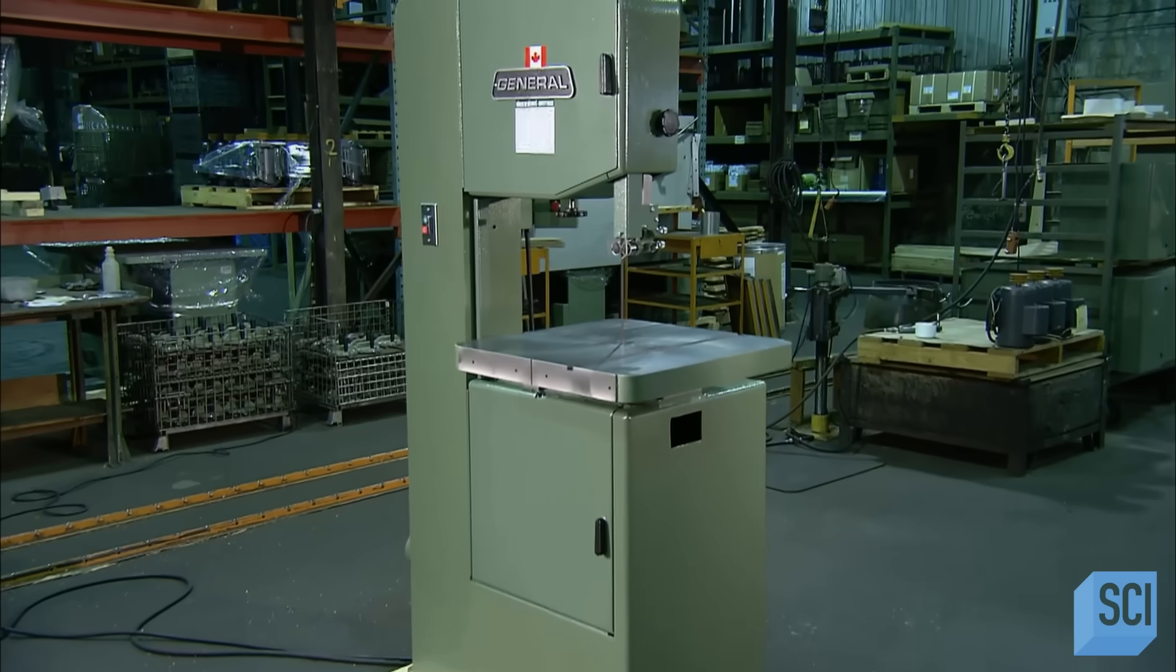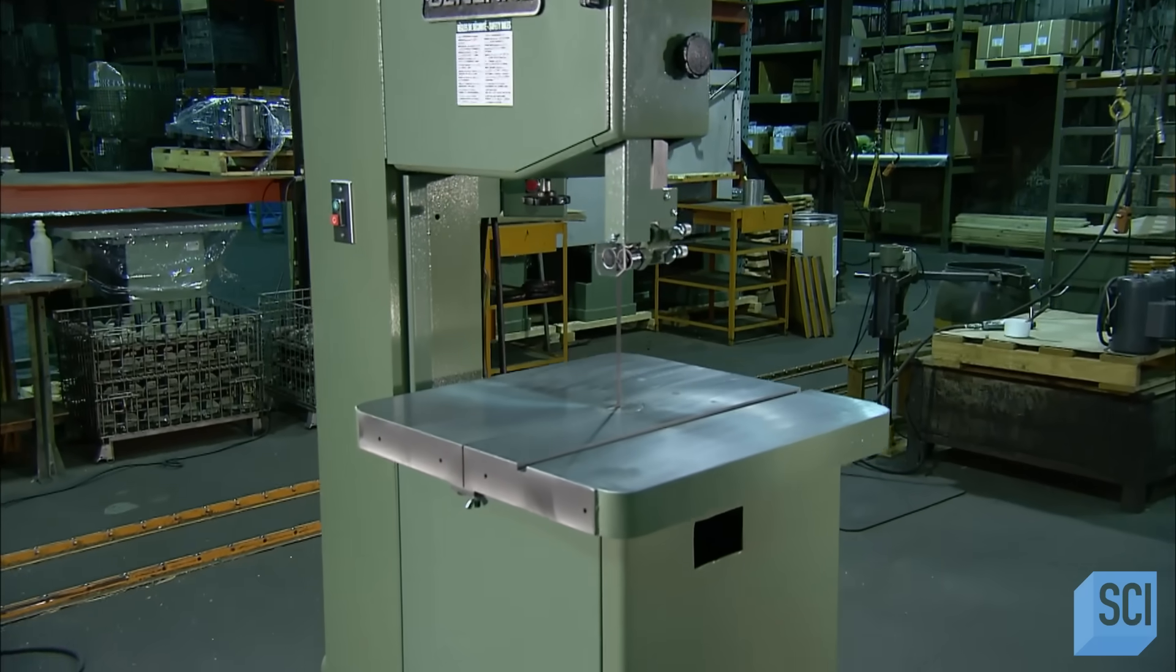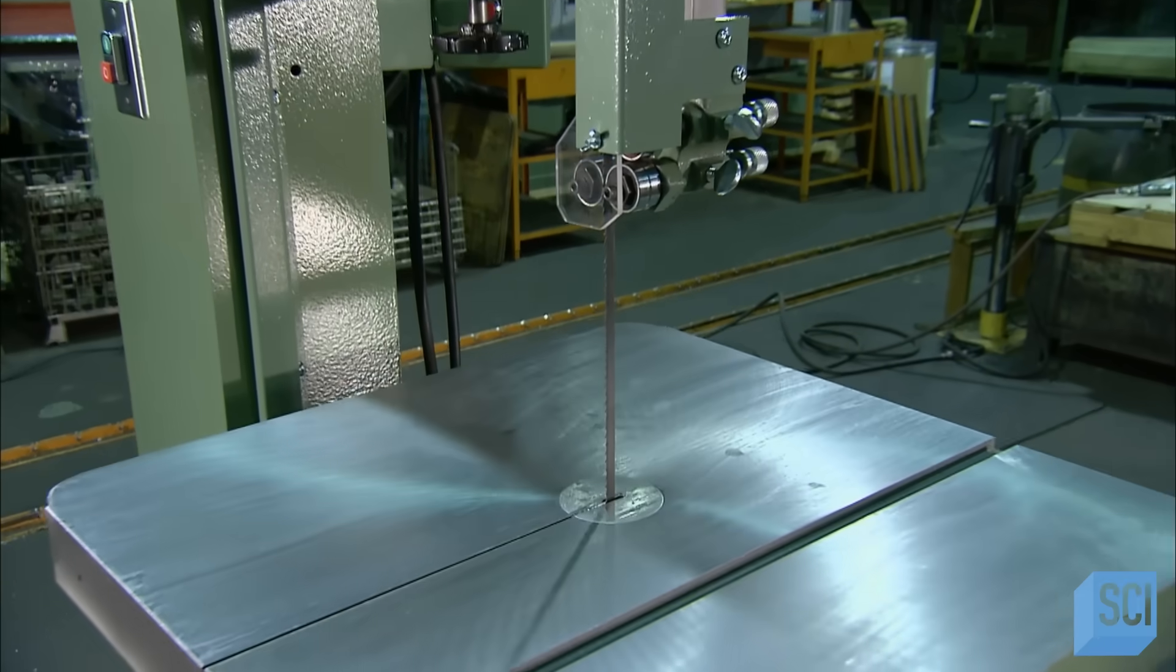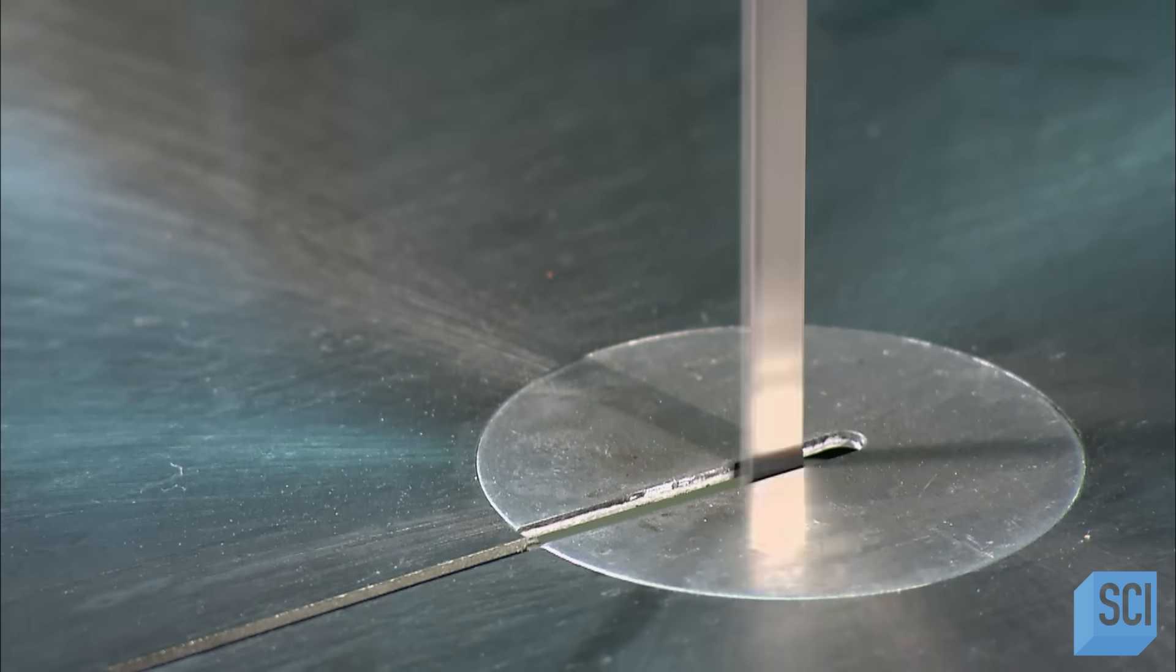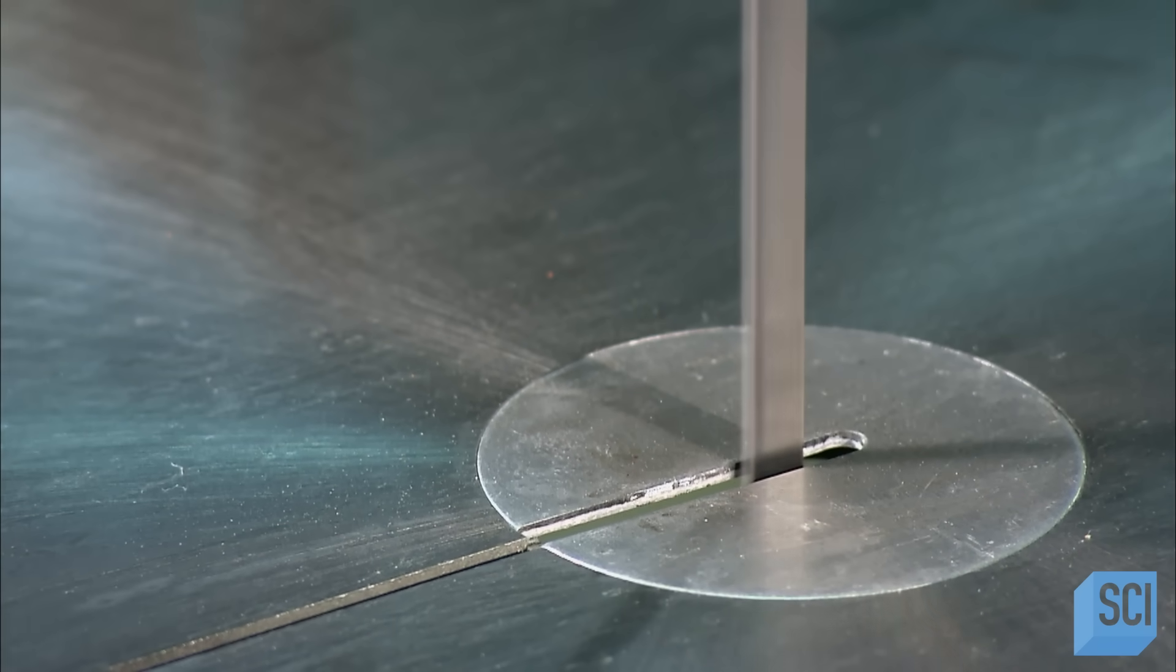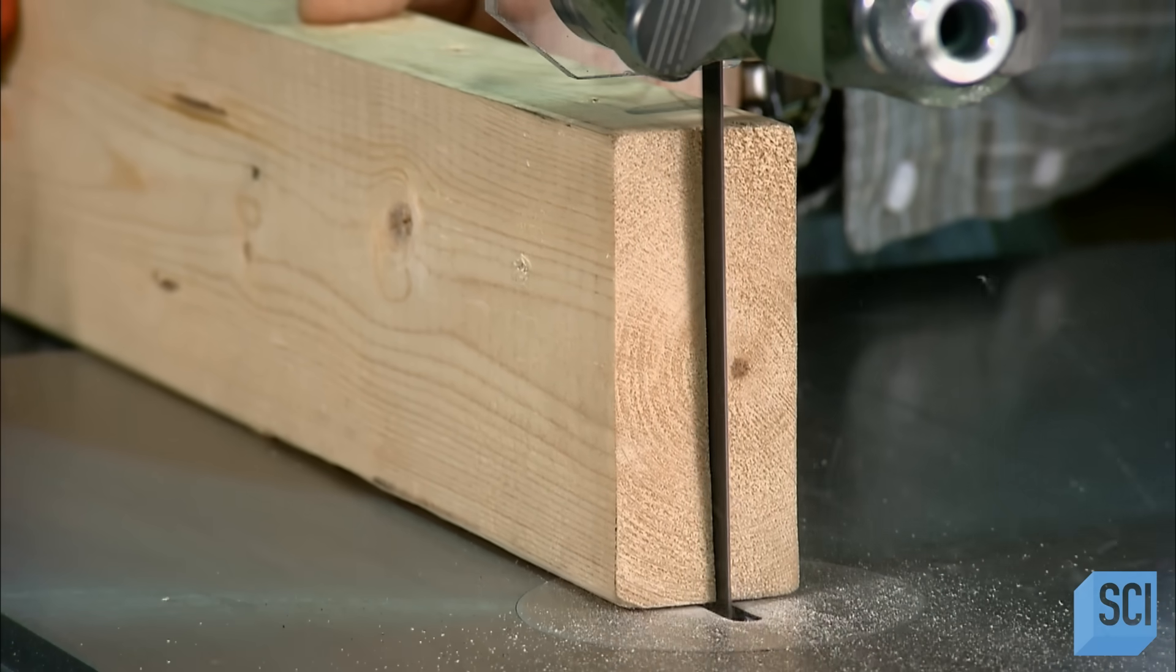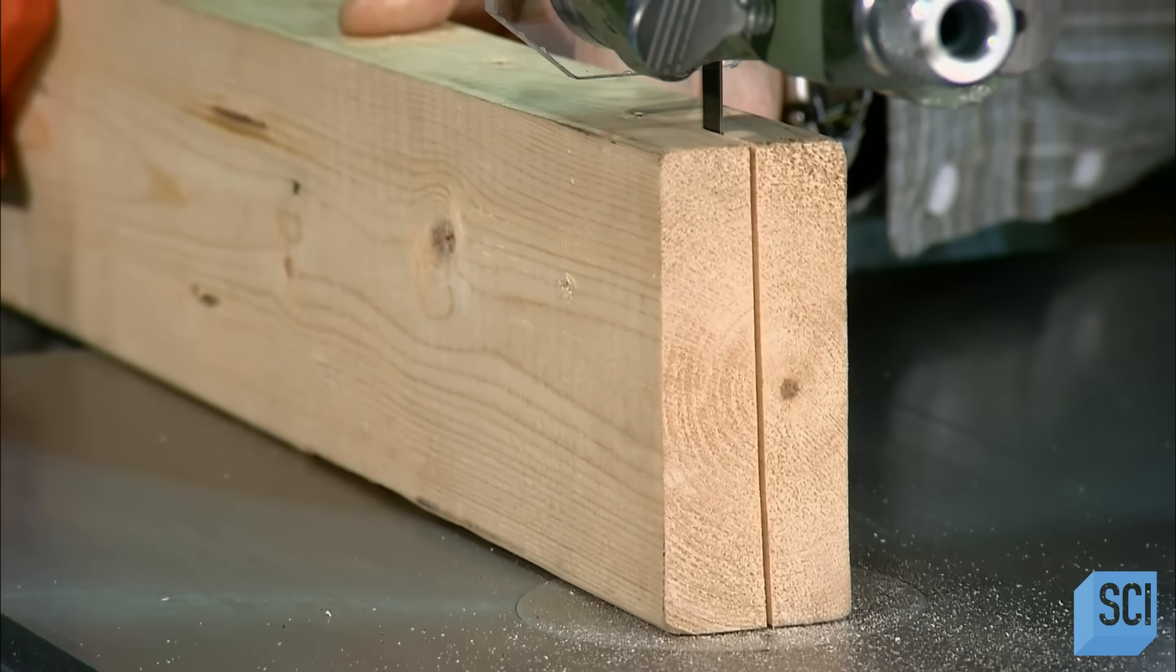This is an industrial bandsaw designed to cut wood, aluminum, and composite materials such as plexiglass. It can cut pieces up to 12 inches thick and can divide a board up to 40 inches wide into two equal sections.